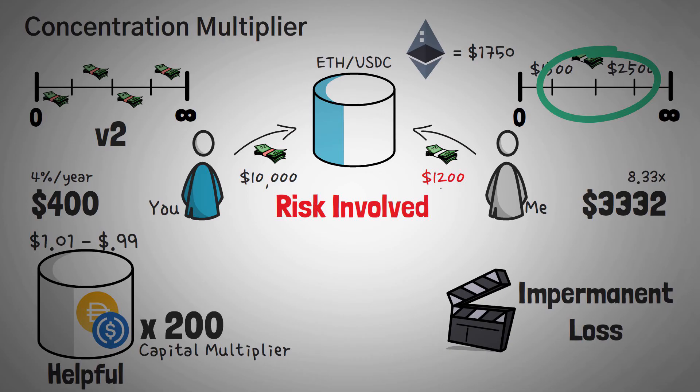Now if you're like me, you might be asking, what's the highest capital multiplier I could get? Well, I'm glad you asked, because I have the answer. And the answer is 4,000 times. Now this only happens when you provide liquidity inside a very narrow range of 0.1%.